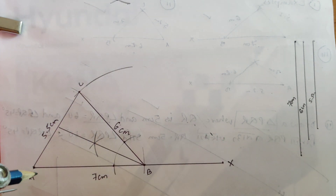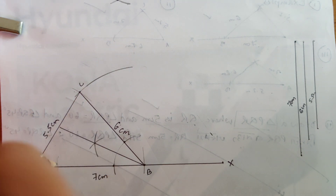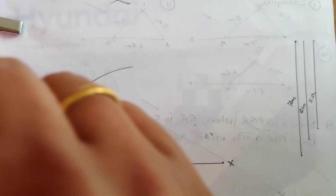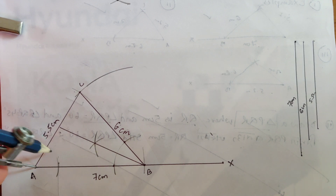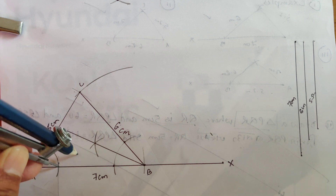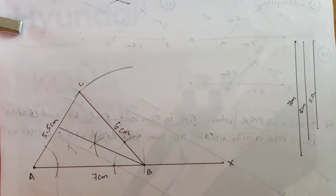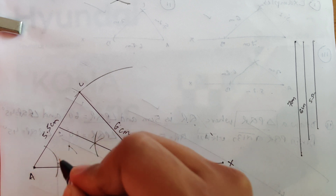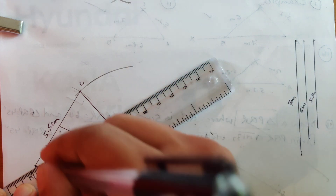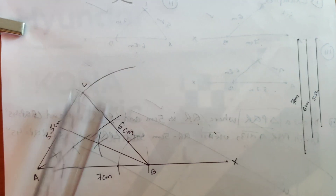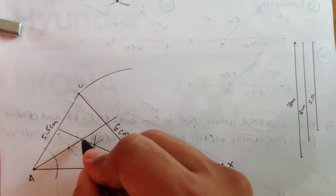There are three angles — angle B, angle A, and angle C. I'm taking angles A and B, which makes it easier. Now let's bisect angle A. You can bisect angle C also, but let's keep it simple. Take any measurement — your compass can move now to take the measurement.